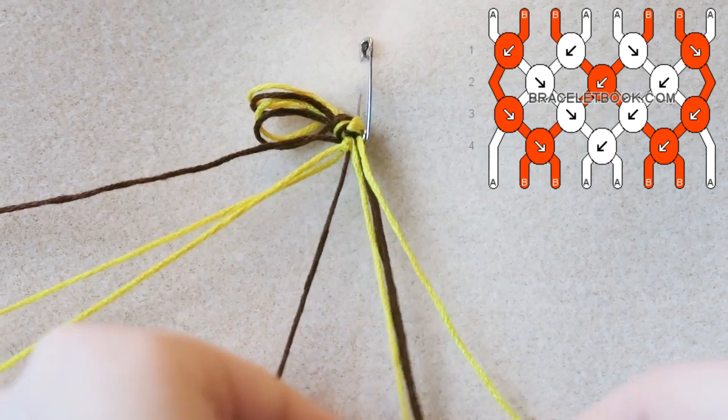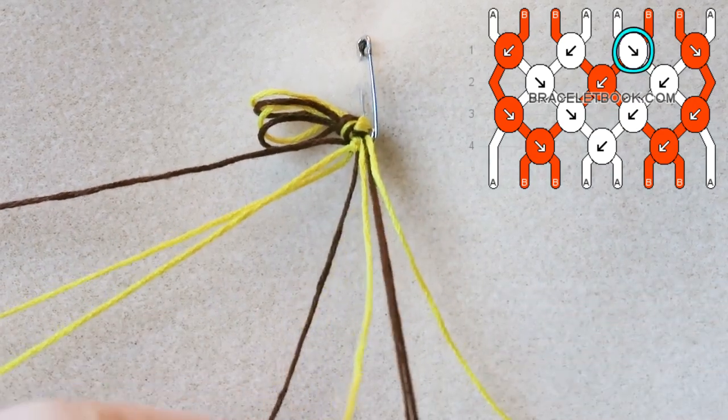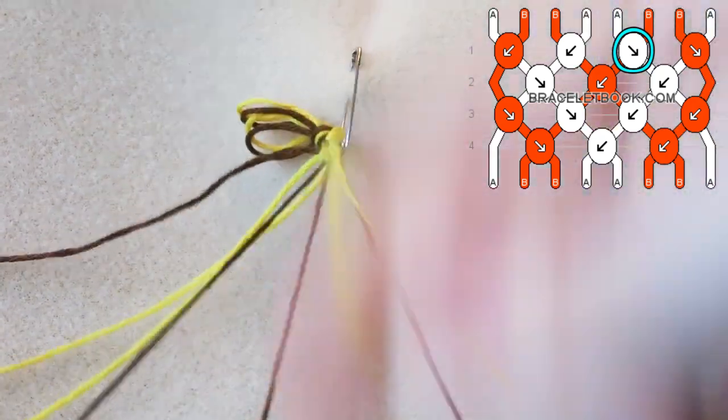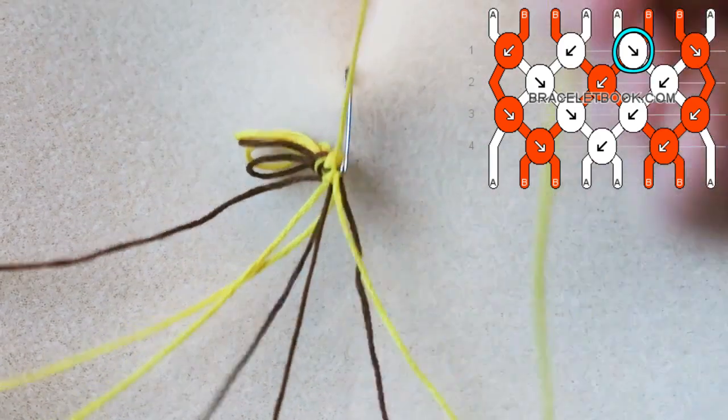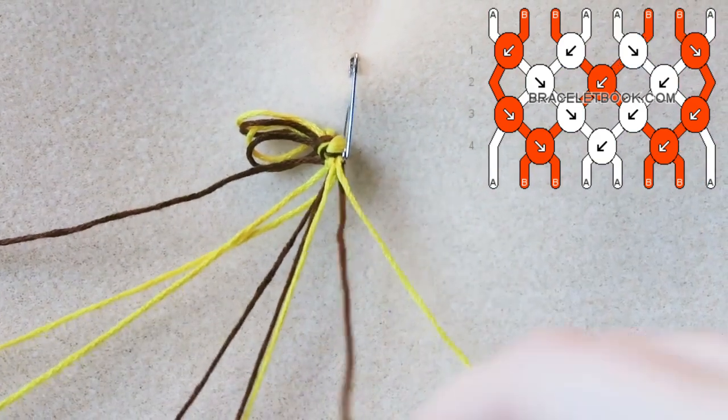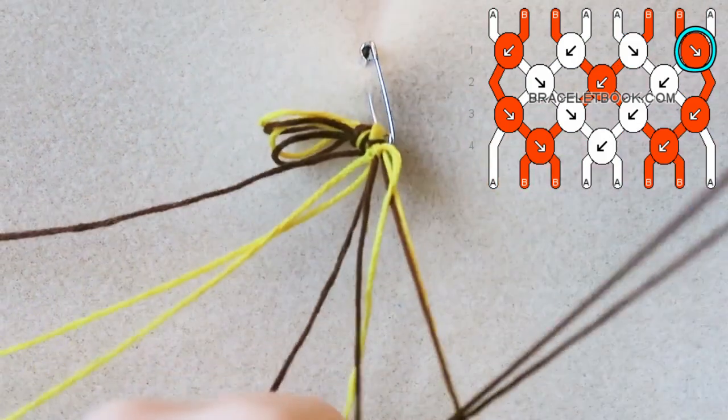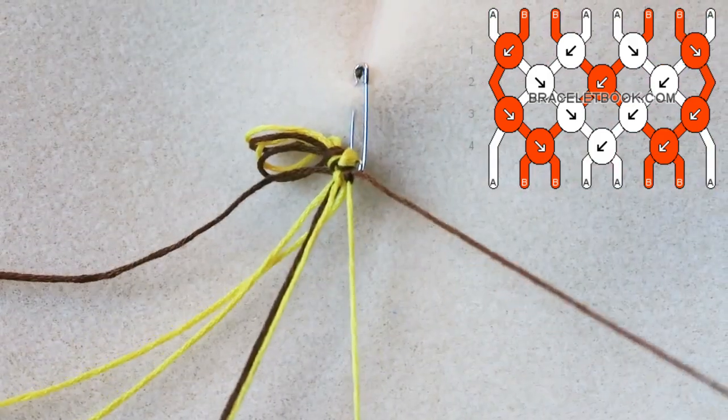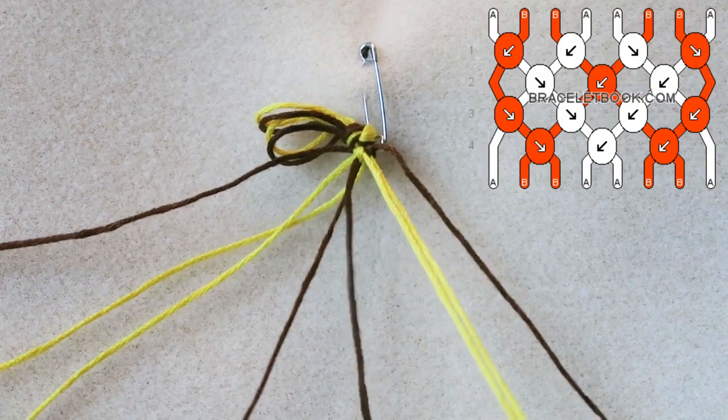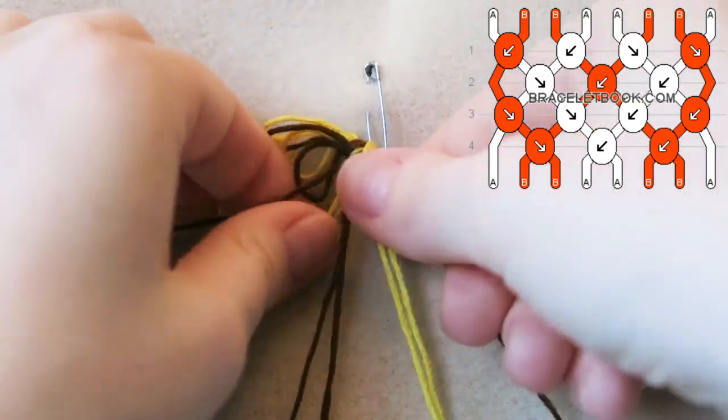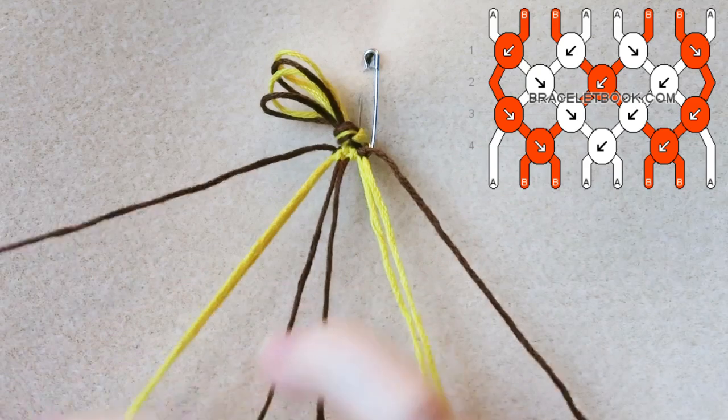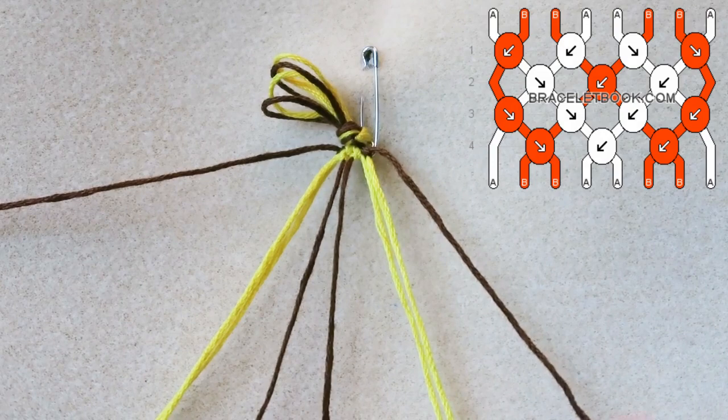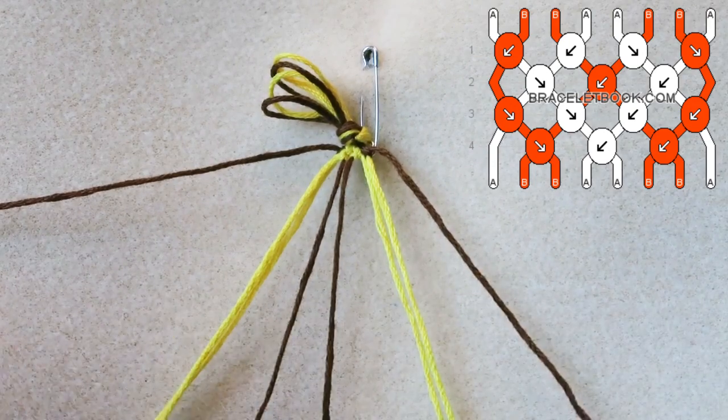Now we're taking the next yellow and doing a forwards knot over the brown next to it. Then we're taking this brown thread and doing a forwards knot over the yellow. Easy peasy.